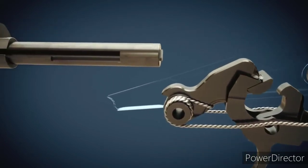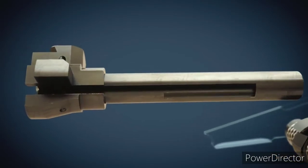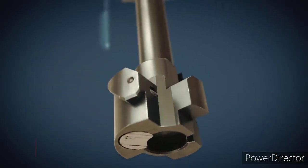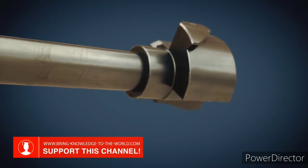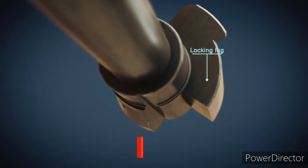AK-47 and AKM are assault rifles with a rotating bolt locking mechanism. Here, the bolt rotates to lock and unlock via two locking lugs.